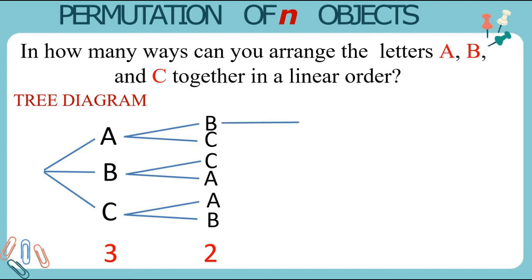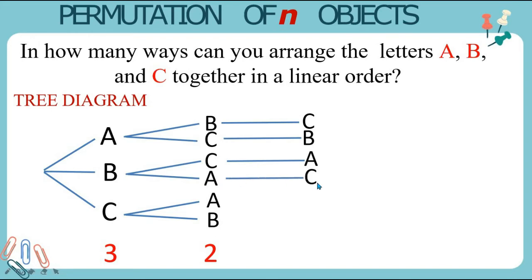For the third order, if we have A and B, we can choose C. If we have A and C, then we will have B. If we have B and C, then A. If we have B and A, then C. If we have C and A, then B. If we have C and B, then A. So this is our third order and we only have 1 choice.